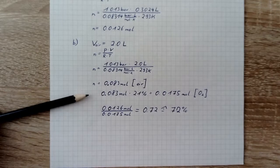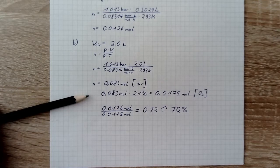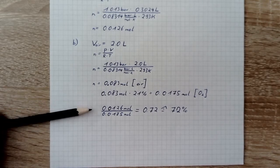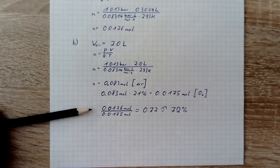times 21% and get 0.0175 moles of oxygen. We divide the result of A by 0.0175 moles and get the result of B which is 72%. Thanks for watching.